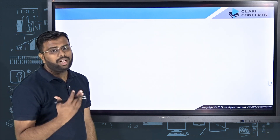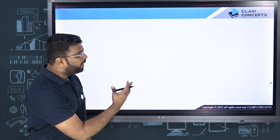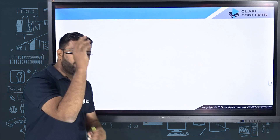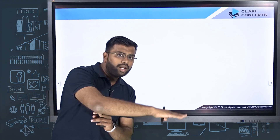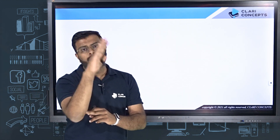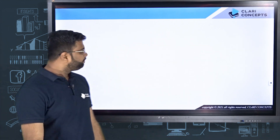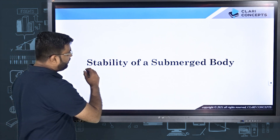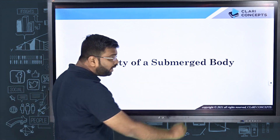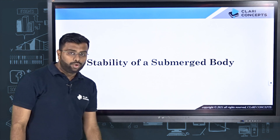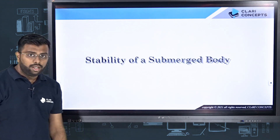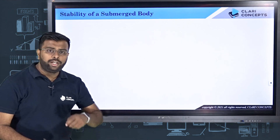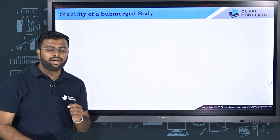Today we will discuss what exactly happens when somebody punches the toy — why it falls down and what is the reason behind its bounce back. That answer will be provided by the topic called stability of a submerged body, which we are going to learn today.